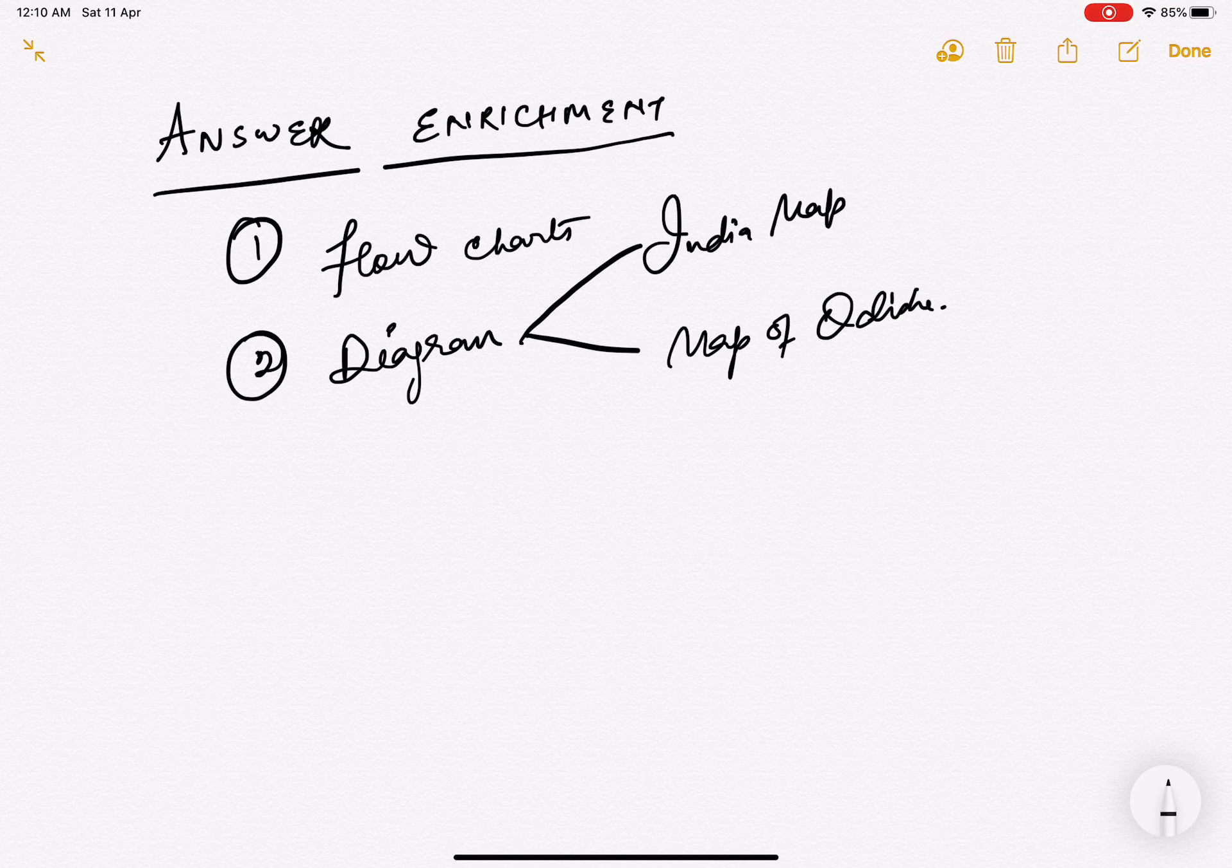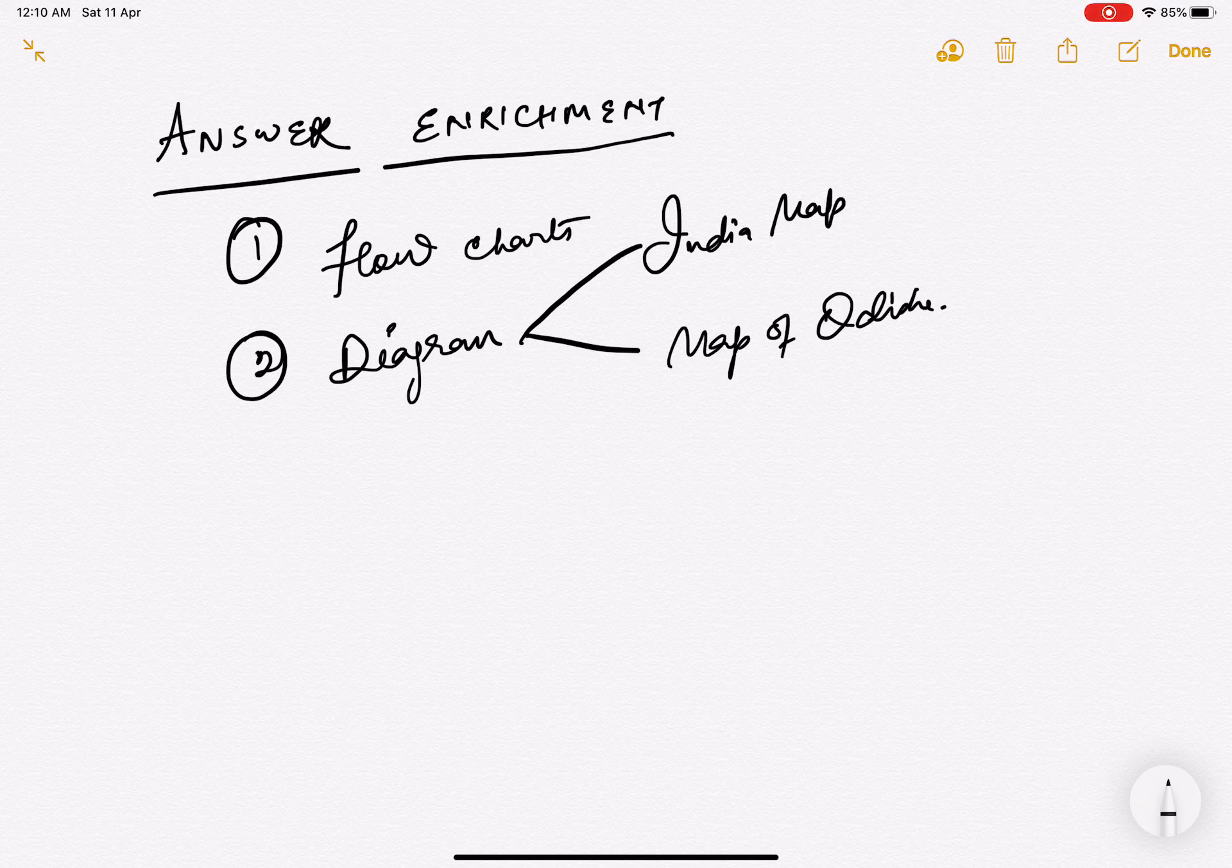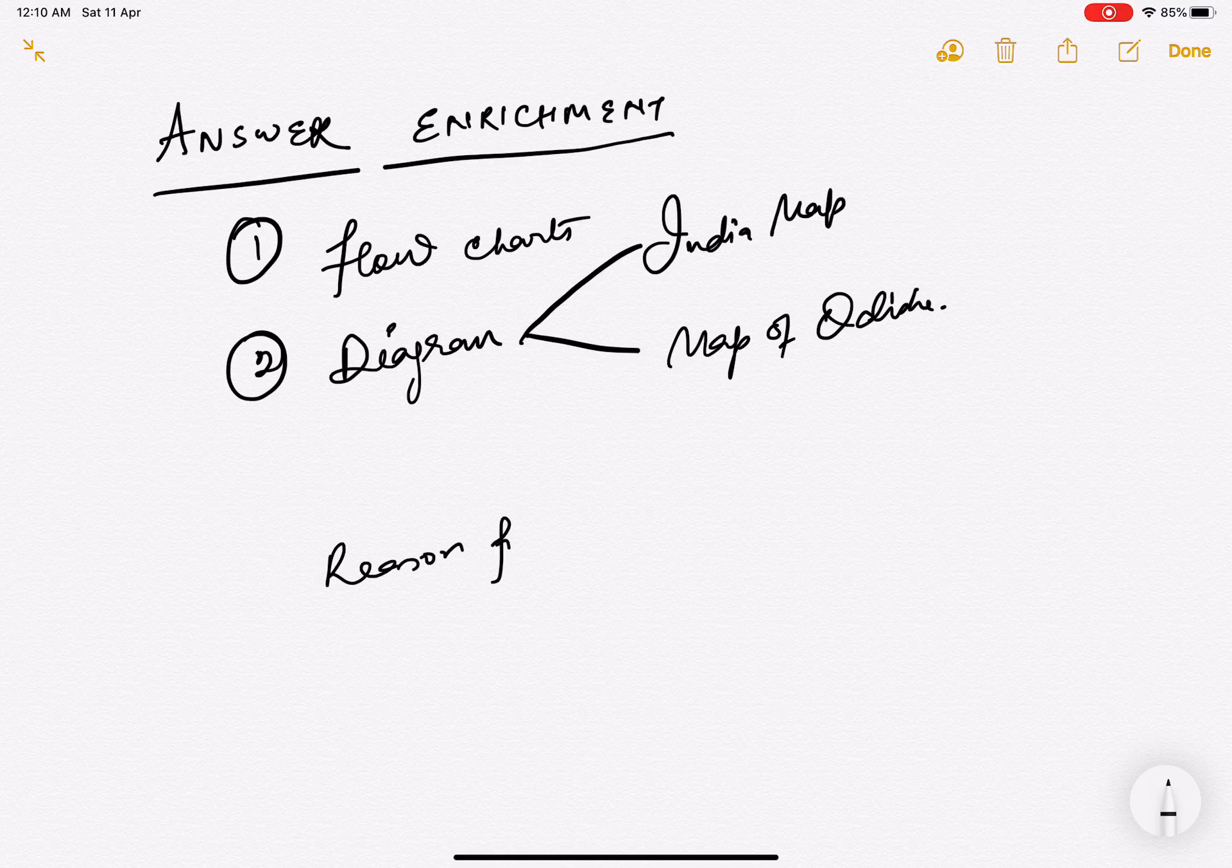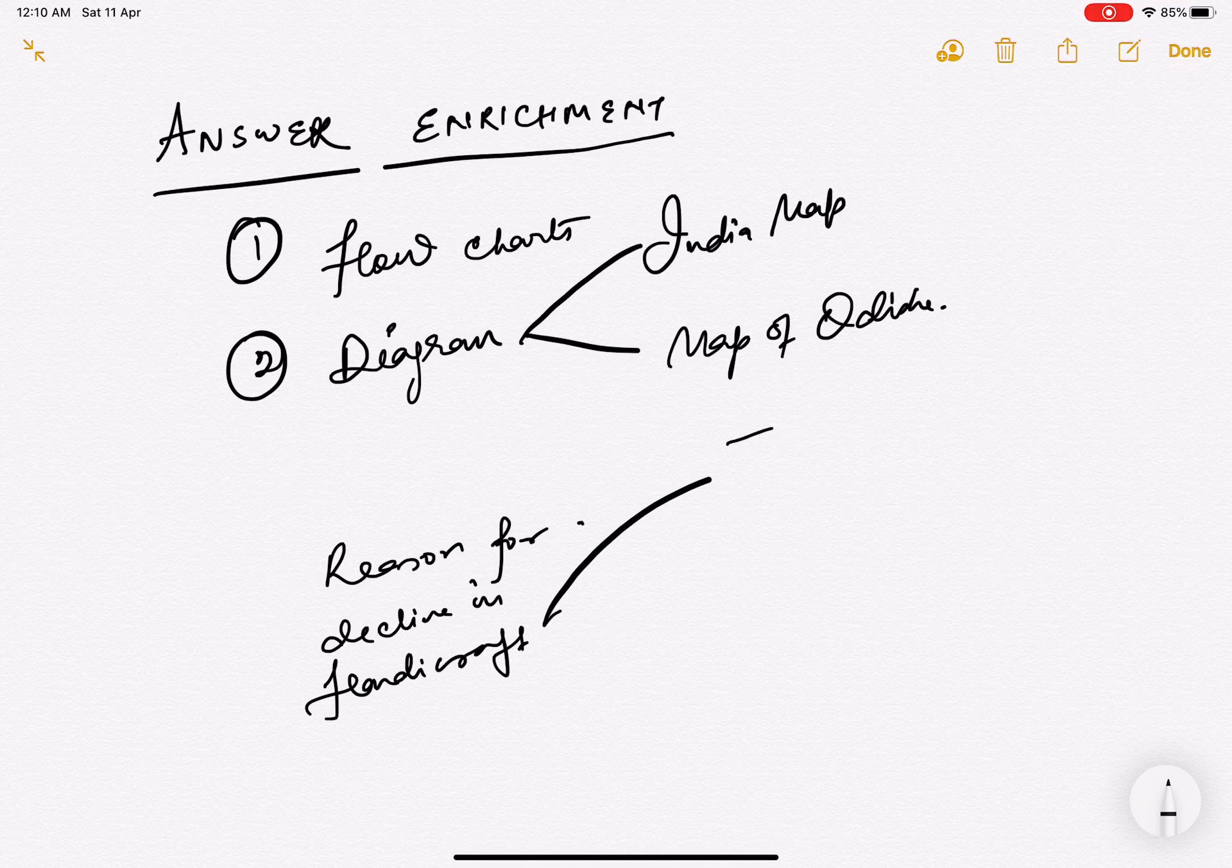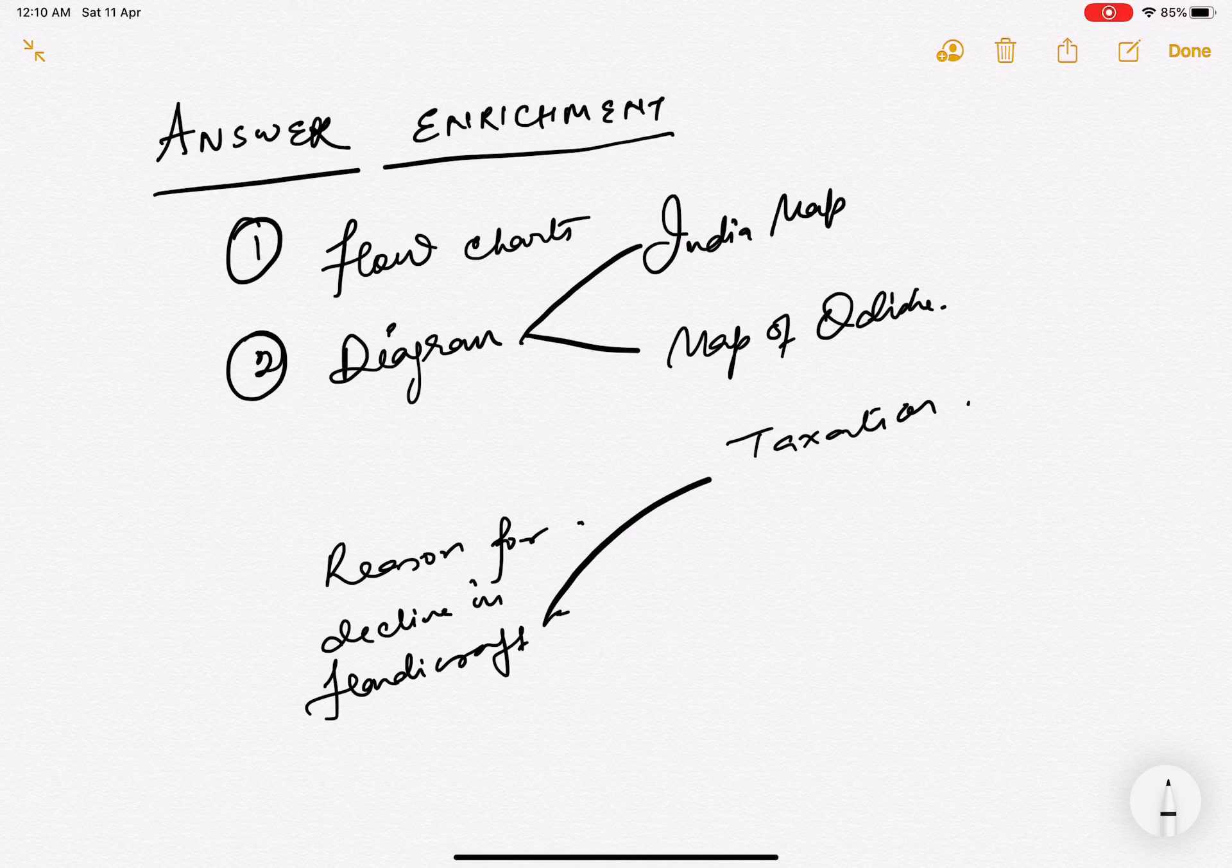When can we add flowcharts? Let's go for a question. Recently Divya Ranjan had posted in the group itself: What were the reasons for the decline of the Indian handicraft industry during the British period? Now in this context, let me make points.